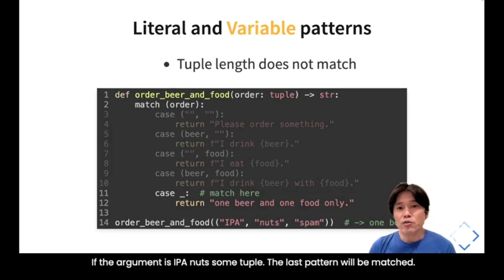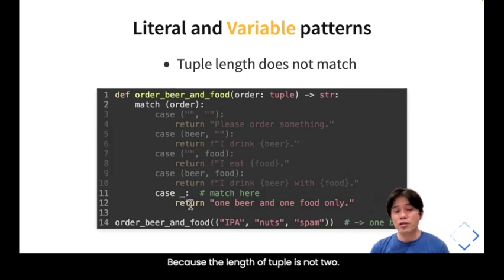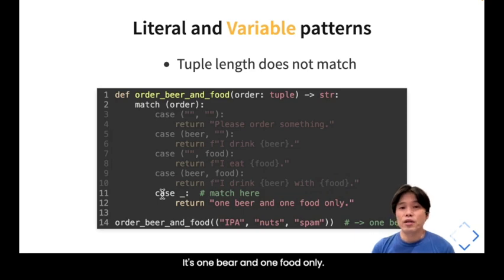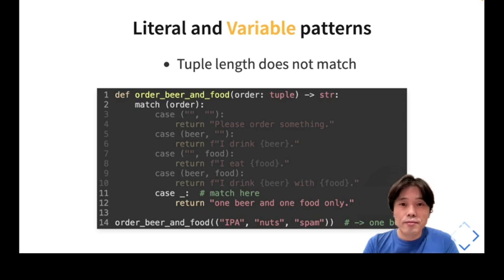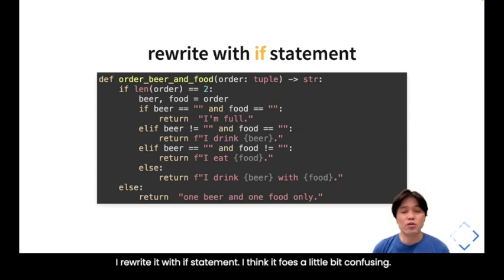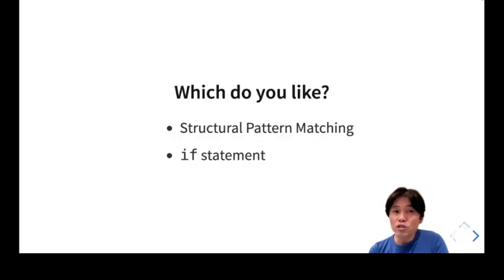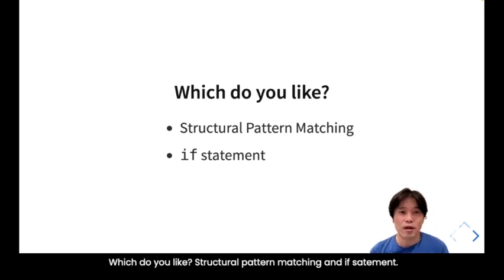If the argument tuple has more than two elements, like ('IPA', 'nuts', 'spam'), the wildcard pattern matches because the length is not two, and the result is 'one beer and one food only'. I rewrote this in an if statement and I think the match-case version is clearer. Which do you prefer?